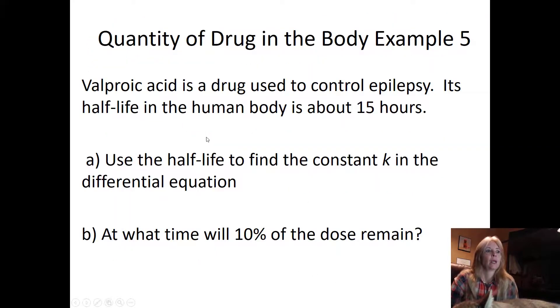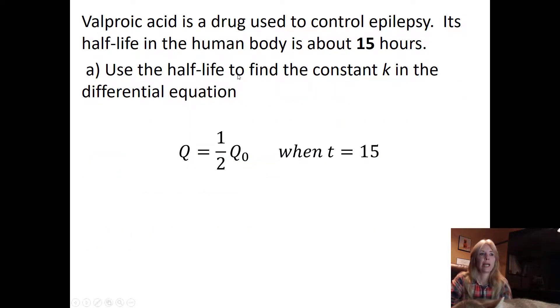This acid is a drug to control epilepsy. Its half-life in the human body is about 15 hours. Use the half-life to find the constant k in our differential equation. At what time will 10 percent of the dose remain? So half of my original quantity when time equals 15. I plug everything in, set my initial quantity to be... Notice this is half-life, so it's cutting it in half, so my constant of proportionality has to be negative.